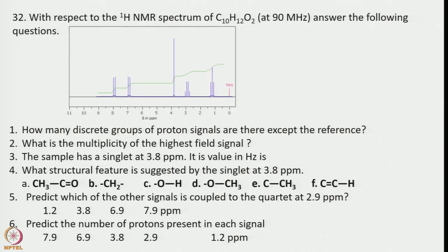How many discrete groups of proton signals are there except the reference? The answer is 5. The highest field signal — the most shielded one, closest to TMS — is a triplet. The sample has a singlet at 3.8 ppm; its value in hertz is obtained by multiplying by the field strength of 90 MHz, so 3.8 × 90 = 342 Hz.